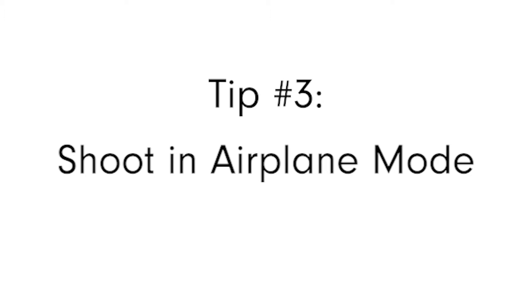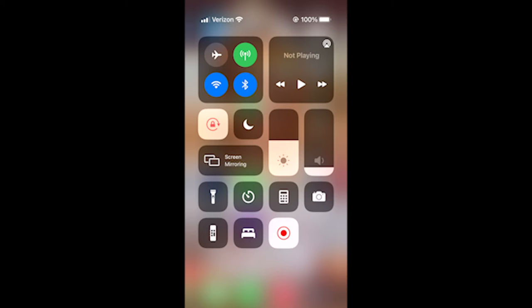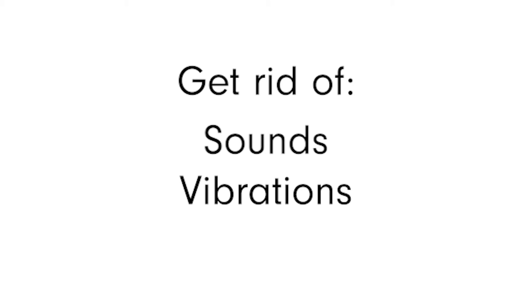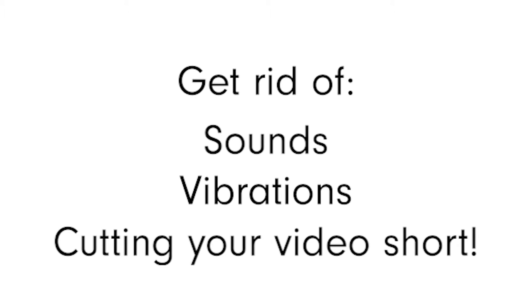Tip number three: shoot in airplane mode. A good video can be quickly ruined and cut short by a simple phone call. One way to minimize this is to put your phone in airplane mode to get rid of notifications that may cause unwanted sounds, buzzes, or worse, cutting your video short.